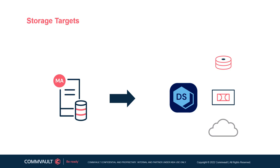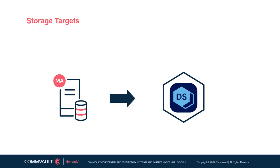Commvault software provides compression, deduplication, and encryption natively via software, which can allow the use of these technologies on cost-effective storage instead of having to purchase separate hardware or products to leverage these technologies. These features will be discussed later in the module.